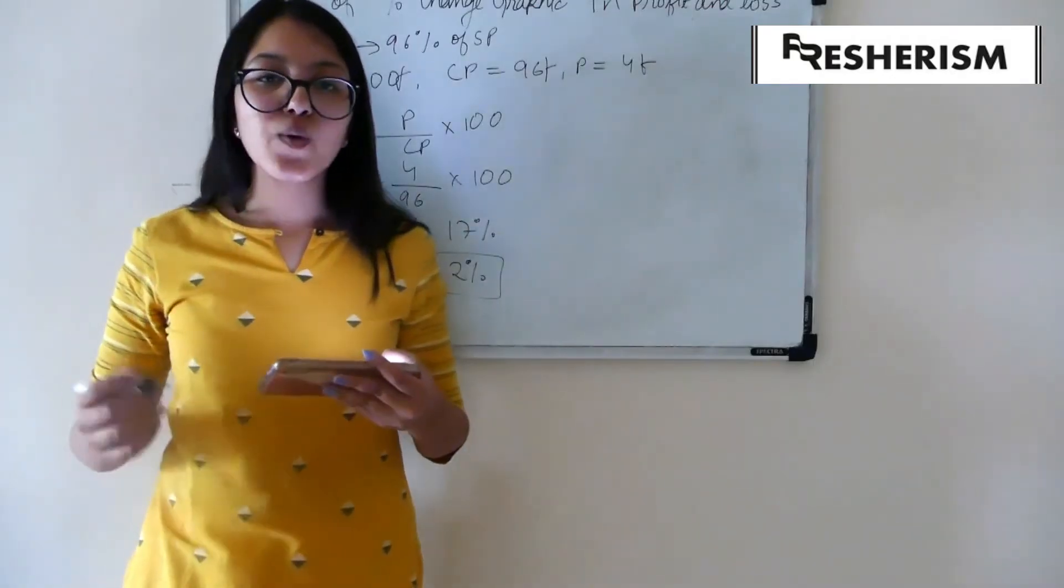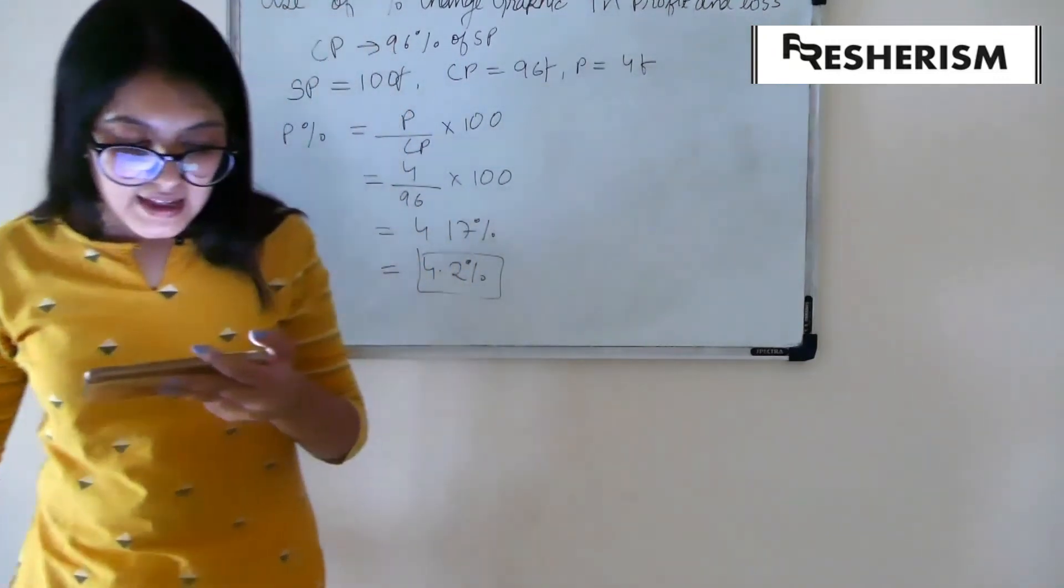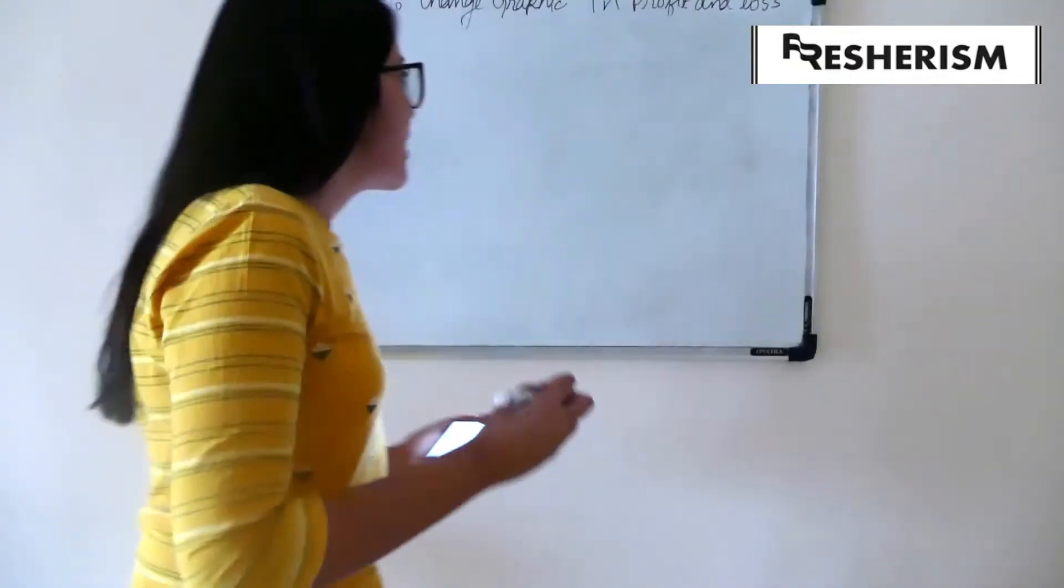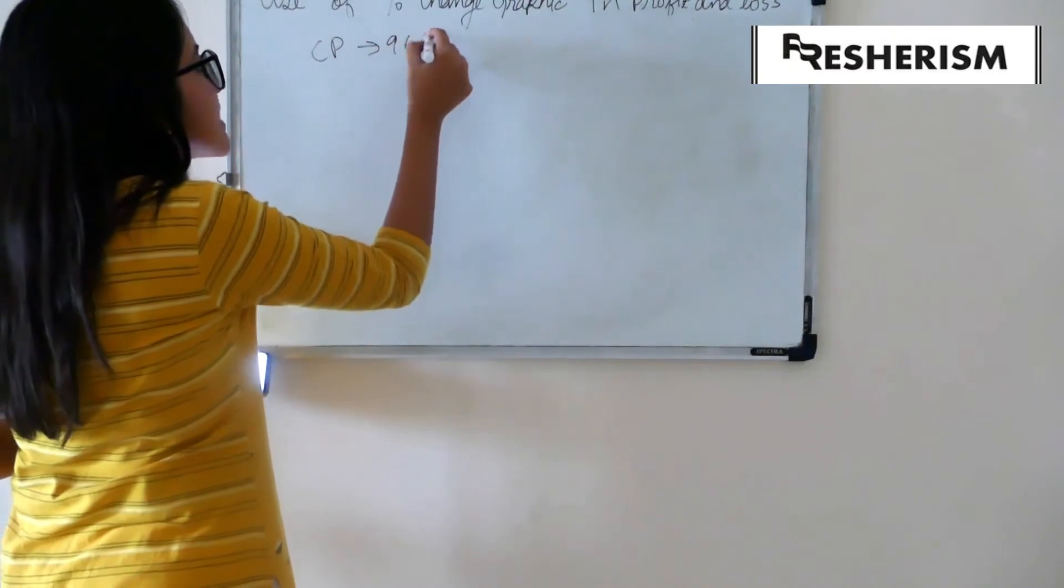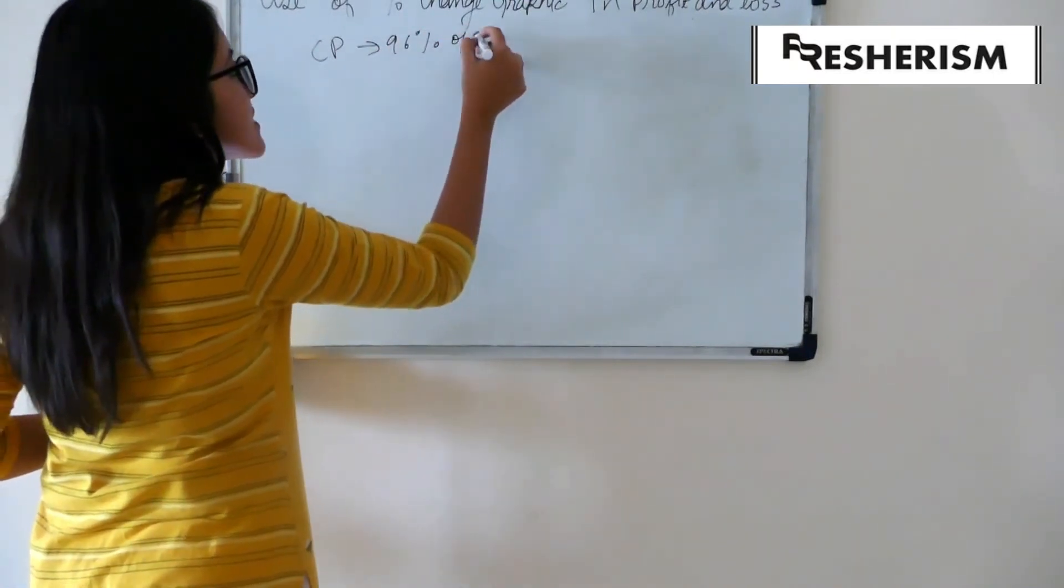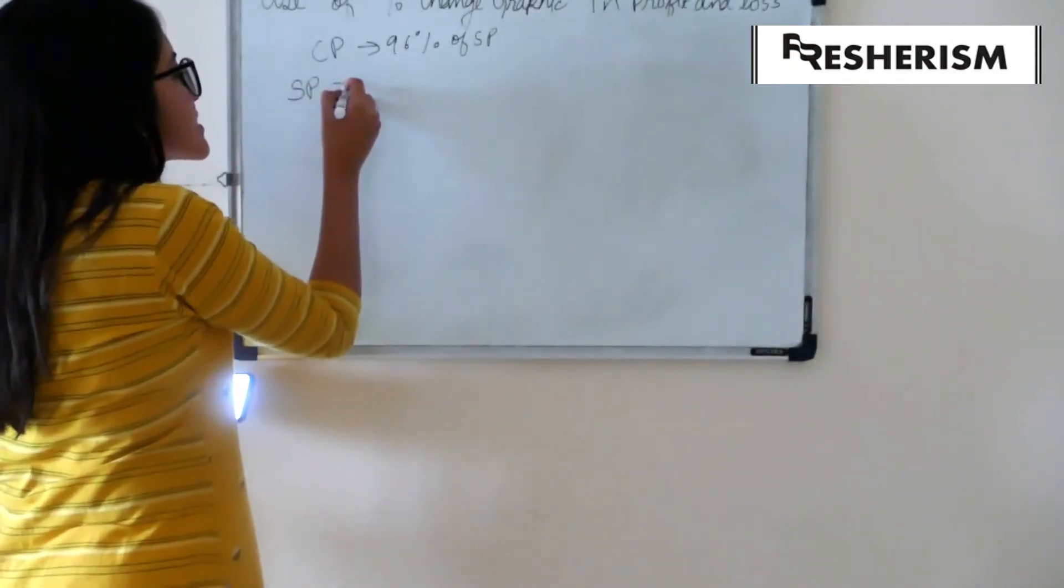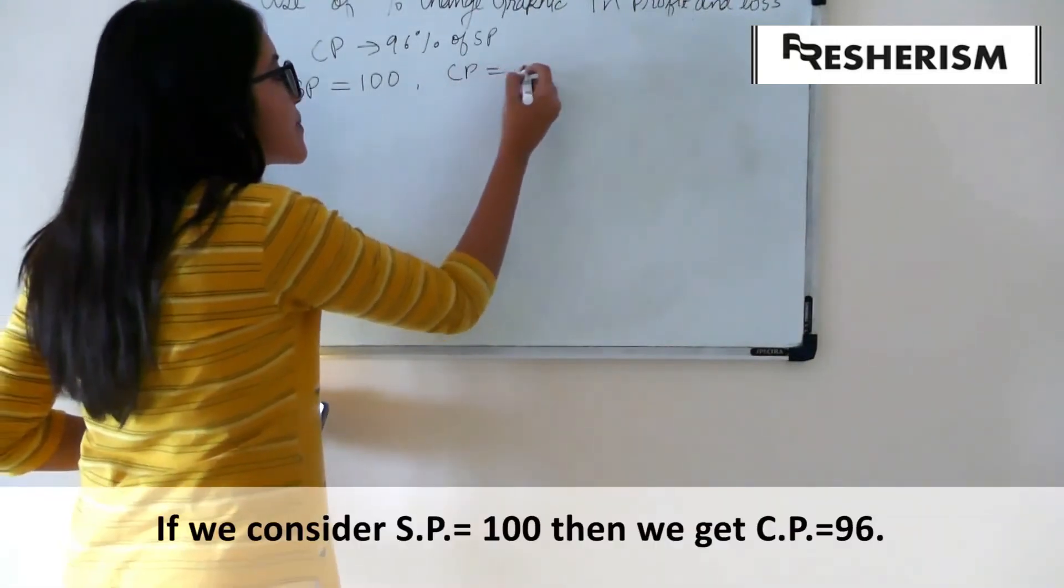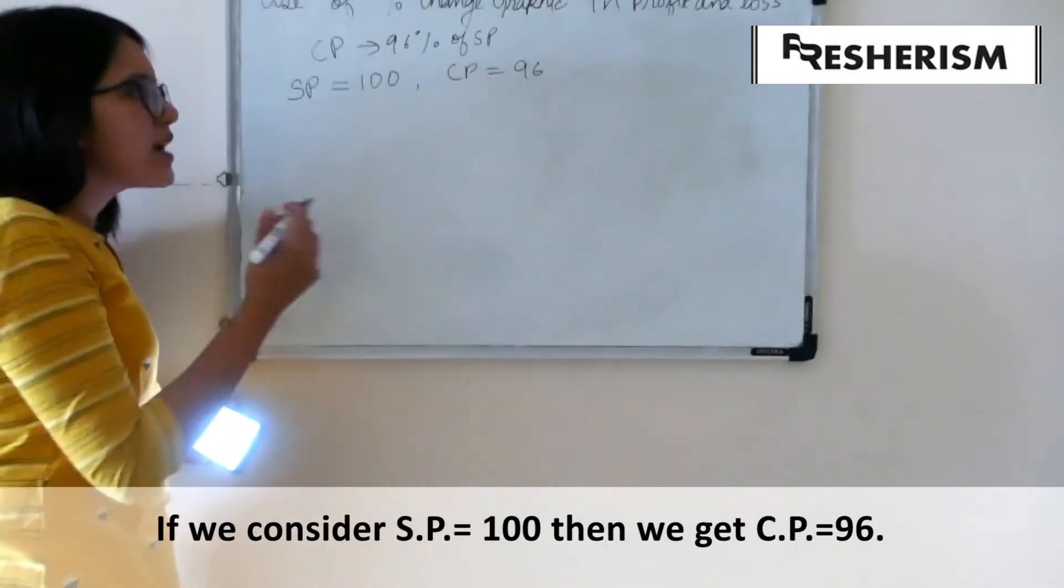Let us now move on to another example. The question on your screen now reads, Here, we have been told that cost price is 96% of selling price. Therefore, if we consider our selling price to be equal to 100, our cost price will be 96. 96% of selling price.